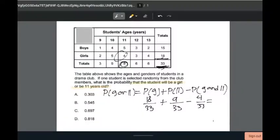After adding them together, we get 23 over 33. After converting it to a decimal and rounding it to the nearest thousandth, the answer will be 0.697.